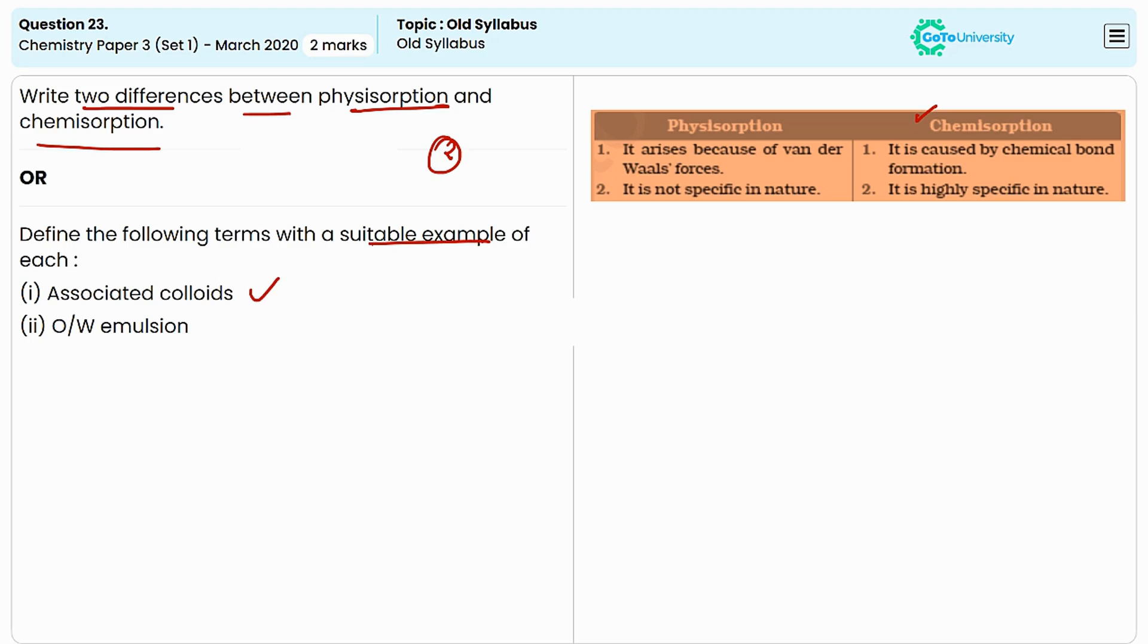Associated colloids, also known as association colloids or micellar systems, are a type of colloidal system where surfactant molecules aggregate to produce structures called micelles. The surfactant molecules align themselves